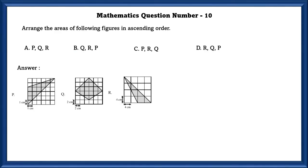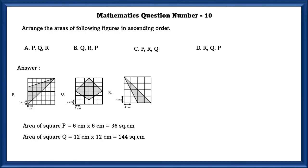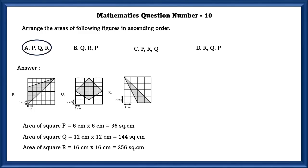Mathematics question number 10. Arrange the area of the following figures in ascending order. We calculate the area of each whole figure. In P, 1 square = 1 × 1 = 1 cm; there are 6 vertical and 6 horizontal, so area of P = 6 × 6 = 36 square centimeters. In Q, each side is 2 centimeters, giving 12 × 12 = 144 square centimeters. In R, the area is 16 × 16 = 256 square centimeters. Arranging in ascending order gives option A as correct.